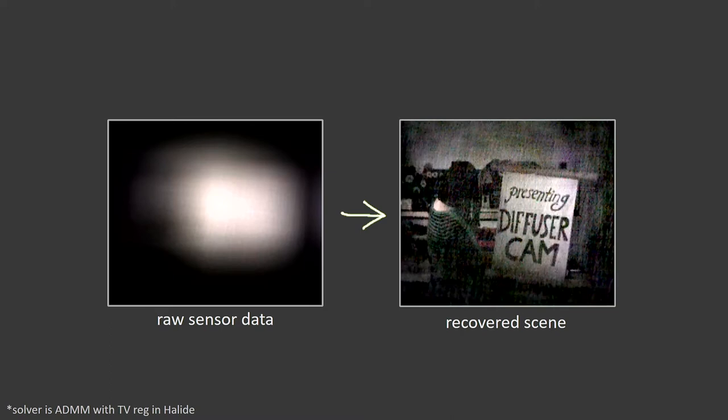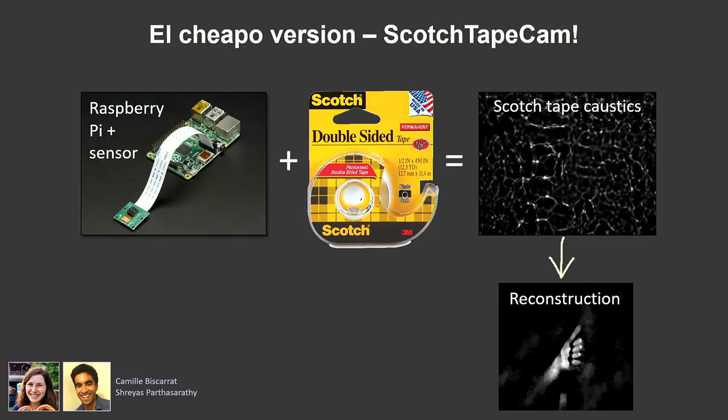But there's something this camera can do that a regular camera cannot: 3D. We also have a cool alternate version — two undergrads, Camille and Shriess, did their class project building one of these with scotch tape. They put scotch tape on a sensor, took some pictures, and reconstructed them. Scotch tape cam — it'll be open source by end of semester, so they say.